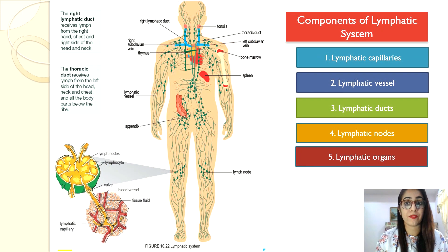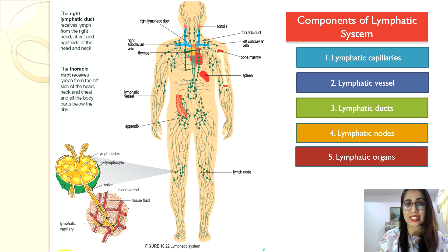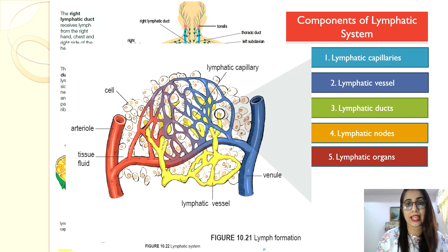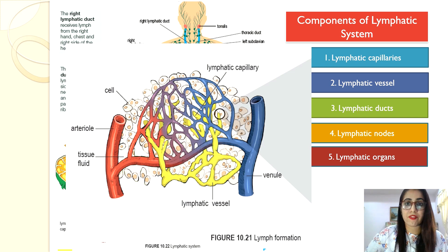Now let's look at the components of the lymphatic system: capillaries, vessels, lymphatic ducts, nodes, and lymphatic organs. Lymphatic capillaries are tiny vessels with dead ends, located in spaces between cells next to blood capillaries. Their walls are one endothelial cell thick and they have valves to ensure lymph flows in one direction. The lacteals in the villi transport lipids. Lymphatic vessels receive lymph from the lymphatic capillaries, are larger in diameter, and also have valves.